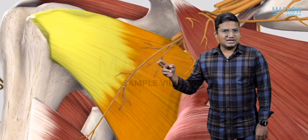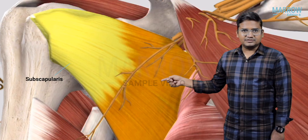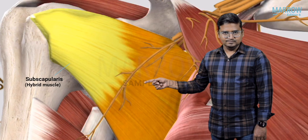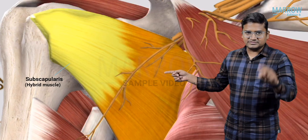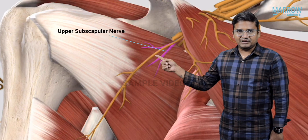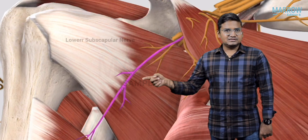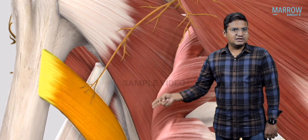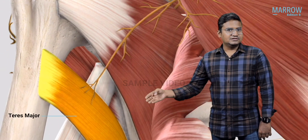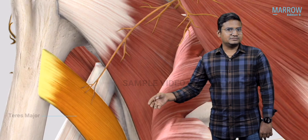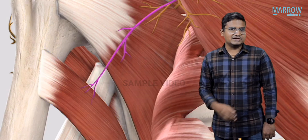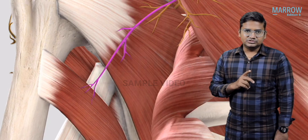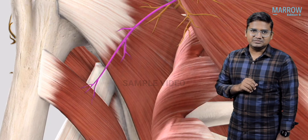Now we are going to see the subscapularis muscle. The subscapularis is a hybrid muscle, and it is supplied by two nerves. The upper subscapular nerve supplies the upper part of subscapularis, and the lower subscapular nerve supplies the subscapularis muscle as well as the teres major muscle. So teres major and subscapularis are both supplied by the lower subscapular nerve.